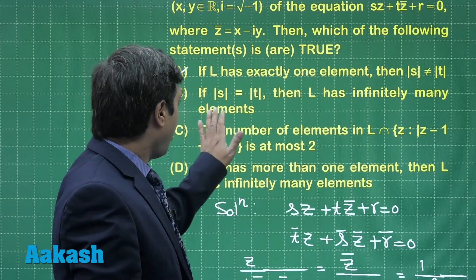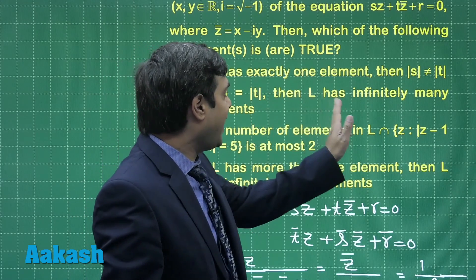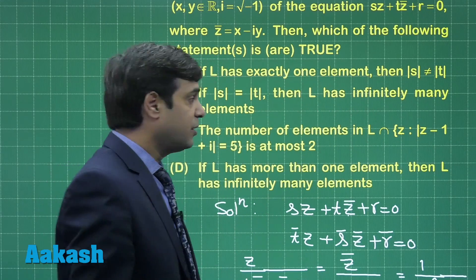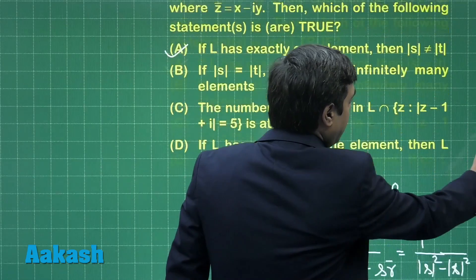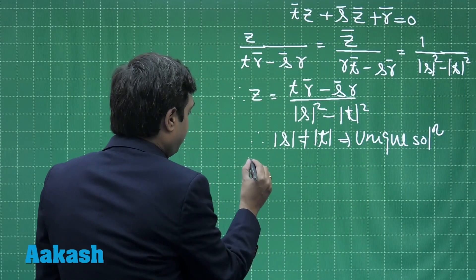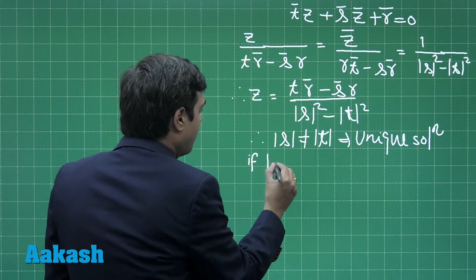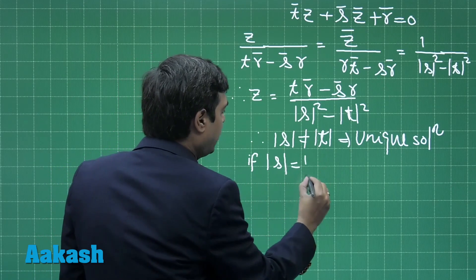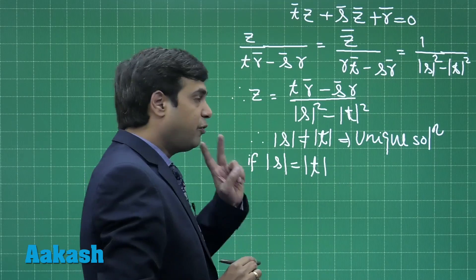Second, if |S| equals |T| then L has infinitely many solutions. Let us check out how many elements are there in L. If |S| equals |T| then L has two possibilities.